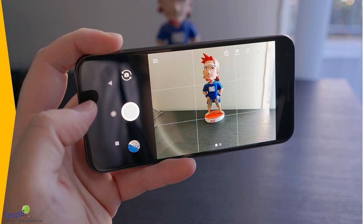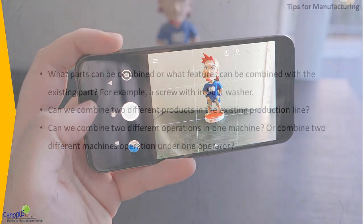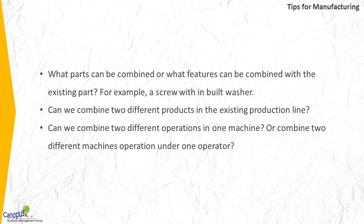Let us look at some tips to effectively apply this principle. In manufacturing: what parts or features can be combined in an existing product? For example, a screw with a built-in washer. Can we combine two different products on the same production line? Can we combine two different operations in one machine, or combine two different machines under one operator?